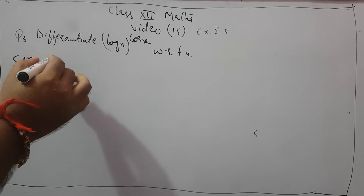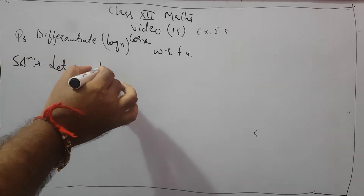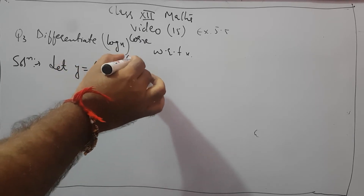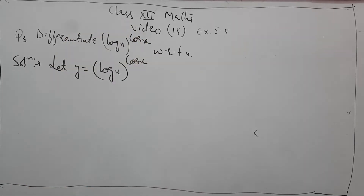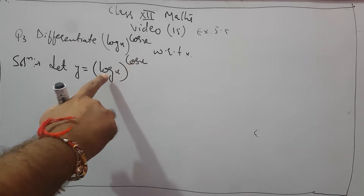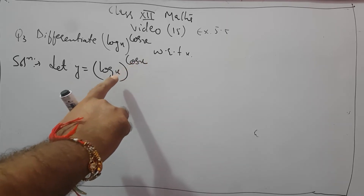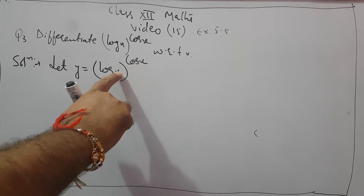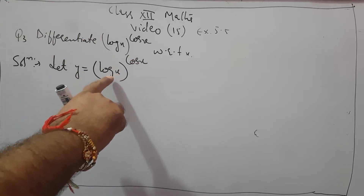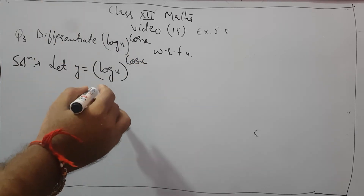Firstly we will let this function — suppose y equals log x raised to power cos x. In this expression, this is called the power and this is the base. The base has x and the power also has x, meaning there is a variable in the base as well as in the power. So when there is a variable in both the base and the power, we apply log to both sides.